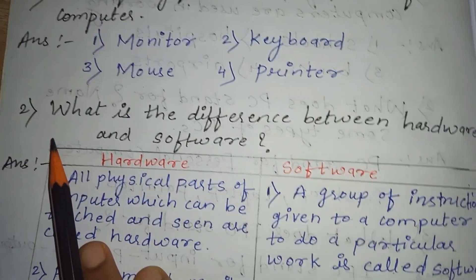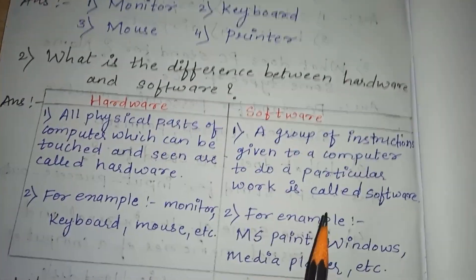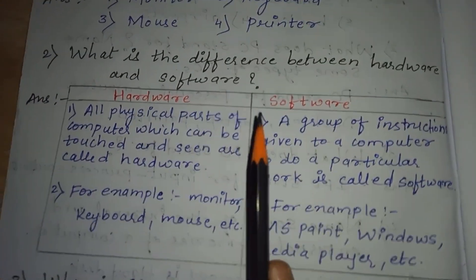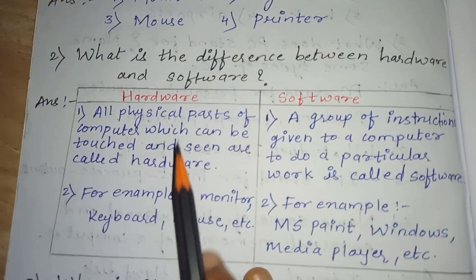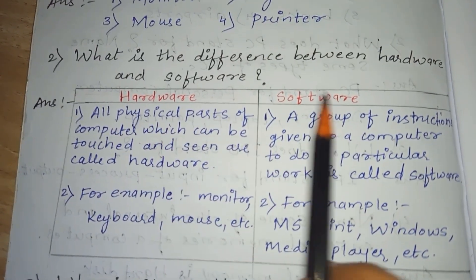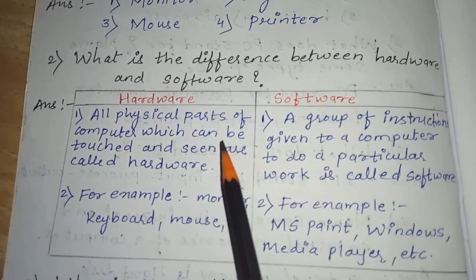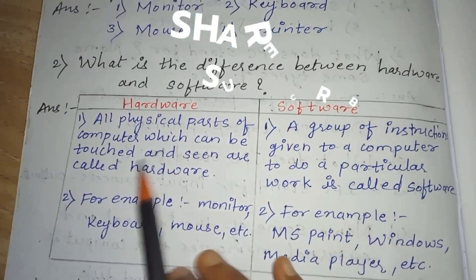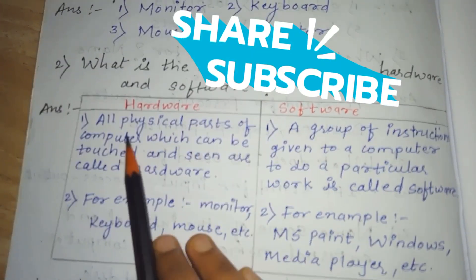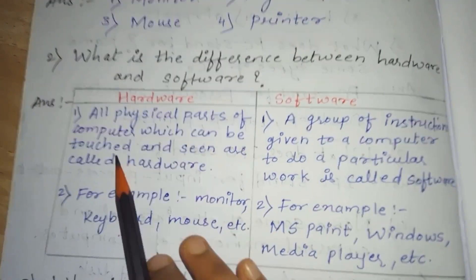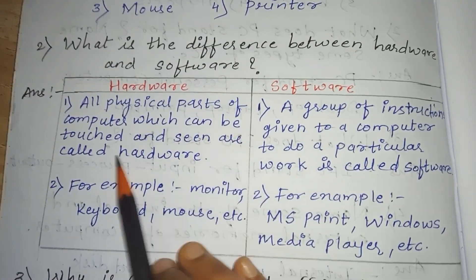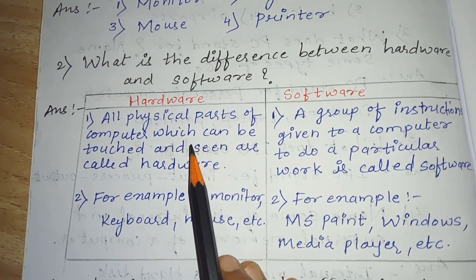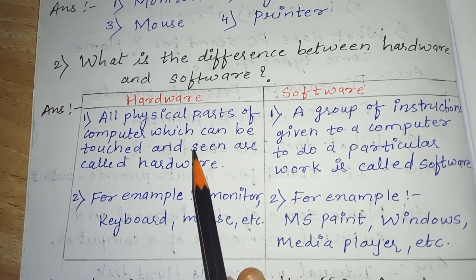Question number 2. What is the difference between hardware and software? Hardware: all physical parts of the computer which can be touched and seen are called hardware. So, hardware is what we can touch and see.